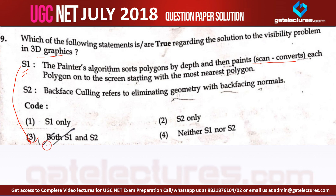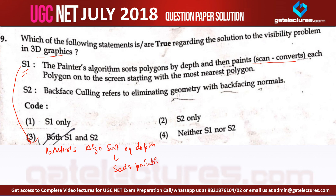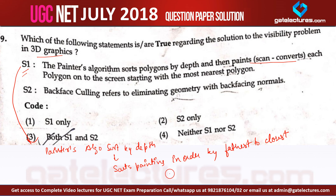For statement number 1, the painter's algorithm sorts by depth, which means it starts painting in order from farthest to closest. First, the object that is far is painted, and last, the object which is nearer to the camera or the eye will be painted. So that is how the painter's algorithm works.